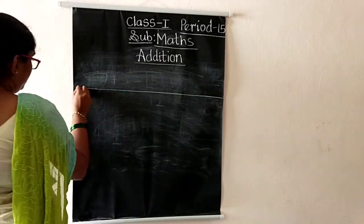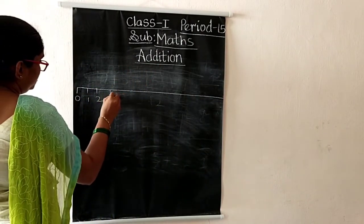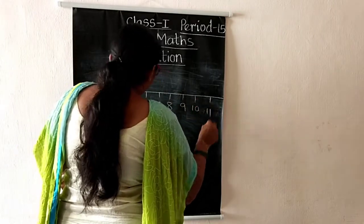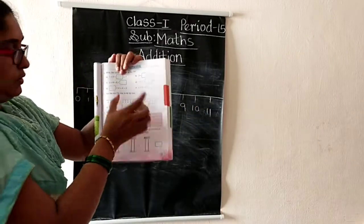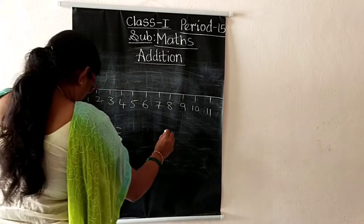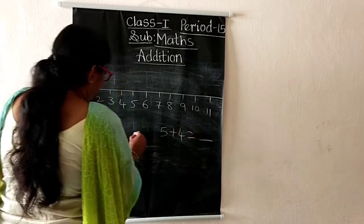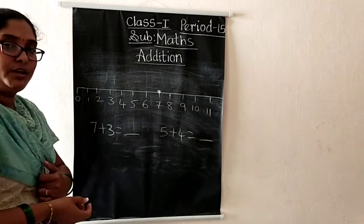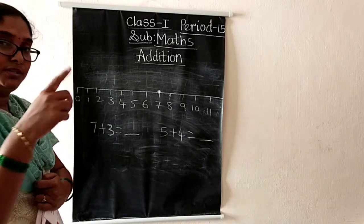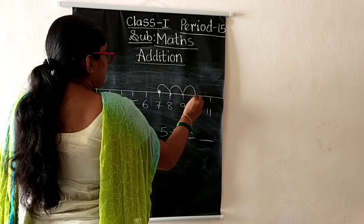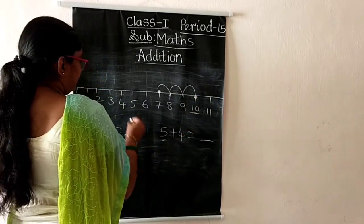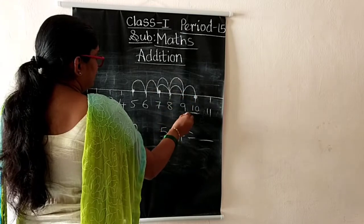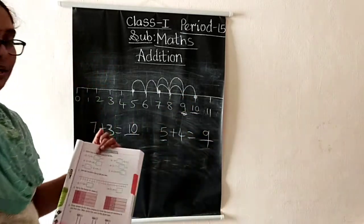Next, use the number line to do the addition. They have given one number line: zero to eleven. There are two additions: seven plus three and five plus four. For seven plus three, go to seven and do three jumps: one, two, three. The answer is ten. For five plus four, go to five and do four jumps: one, two, three, four. The answer is nine.